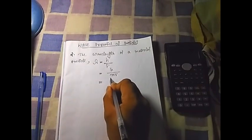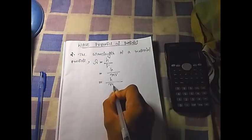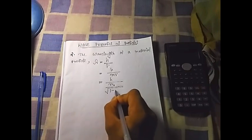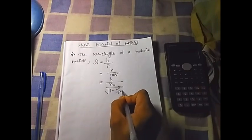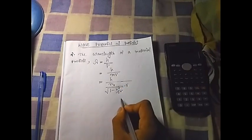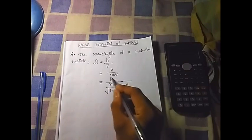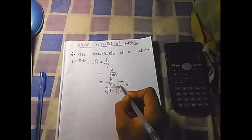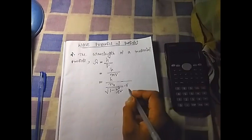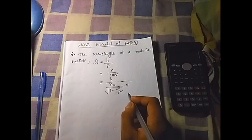We know from the special theory of relativity the formula of momentum, which is p equal to M naught divided by the square root of 1 minus V squared by C squared, times its velocity. We substitute the formula of mass here, which is M naught gamma.